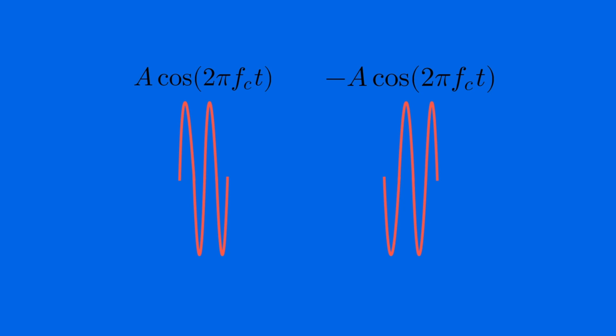So in a nutshell, a phase shift of 180 degrees in the regular carrier signal represents a binary zero, while no phase shift of the carrier signal represents a binary one.